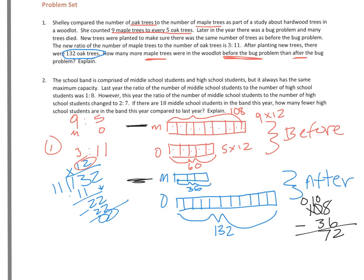So the answer to that one is there were 72 more maple trees in the woodlot before the bug problem. You'll have to further explain how you did that. But we gave a pretty good explanation that we found how much each unit was worth. Each unit was worth 12, so you multiply 12 by the number of units.